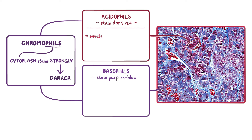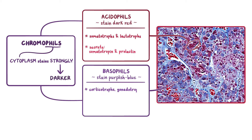Acidophils consist of somatotrophs and lactotrophs, therefore they are responsible for secreting growth hormone or somatotropin, as well as prolactin. The basophilic cells consist of corticotrophs, gonadotrophs, and thyrotrophs, so they secrete the remaining hormones associated with the anterior pituitary, including melanocyte-stimulating hormone or MSH, adrenocorticotrophic hormone or ACTH, luteinizing hormone or LH, follicle-stimulating hormone or FSH, and thyroid-stimulating hormone or TSH.